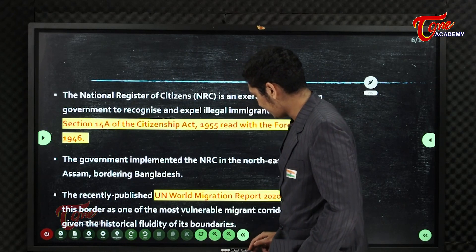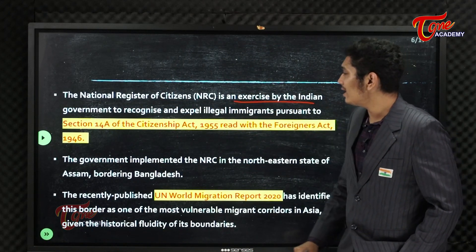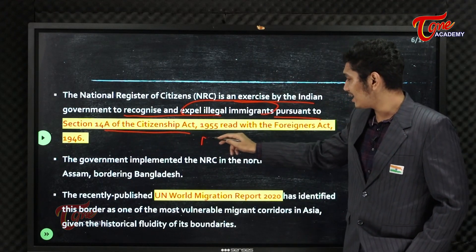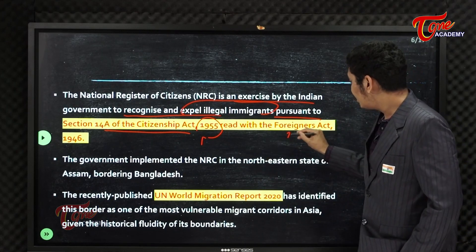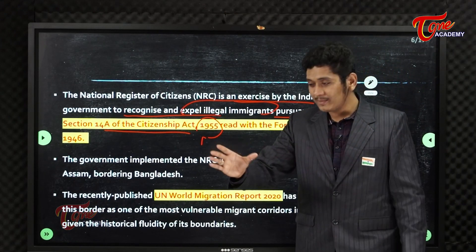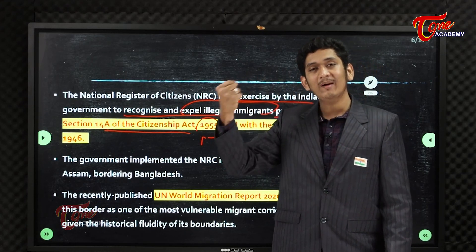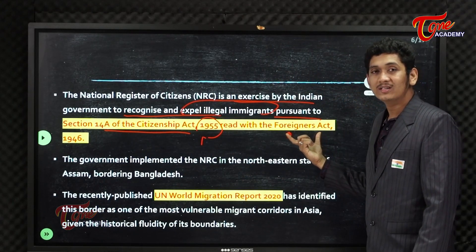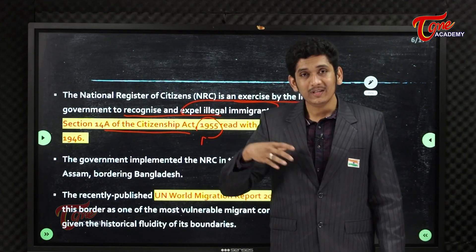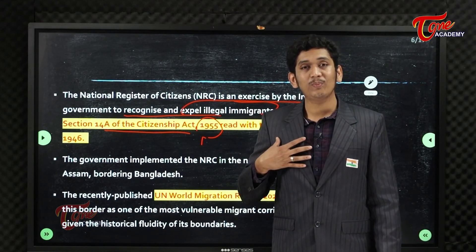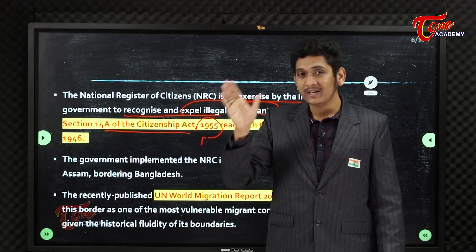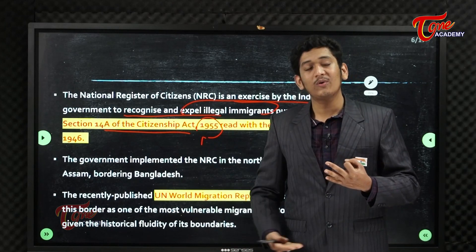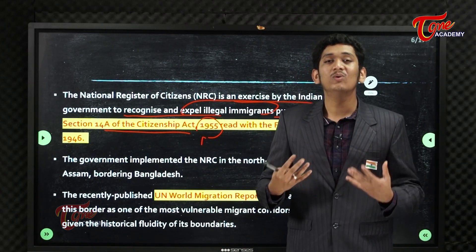The National Register of Citizens is an exercise by the Indian government to recognize and expel illegal migrants pursuant to Section 14A of the Citizenship Act 1955 read along with the Foreigners Act 1946. Any person whose name is not found in the NRC register will be put into a detention center, from where he has to appeal in the Foreigners Tribunal under the Foreigners Act. In that tribunal, the burden of proof — to prove that I am a citizen of India — lies with the individual, either through a father's certificate, an LIC policy, or the electoral roll of forefathers.